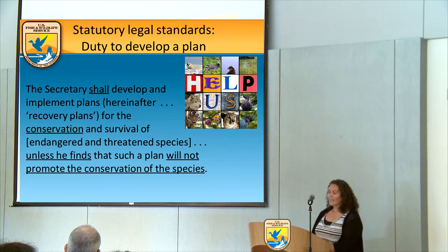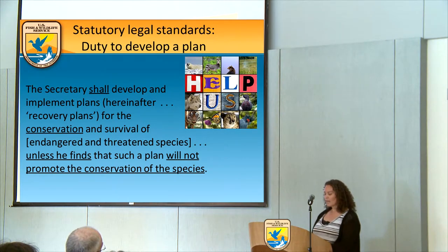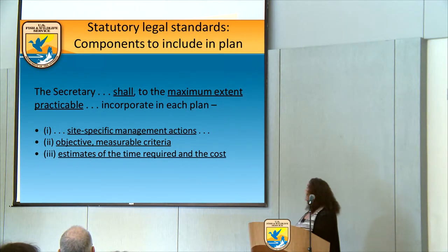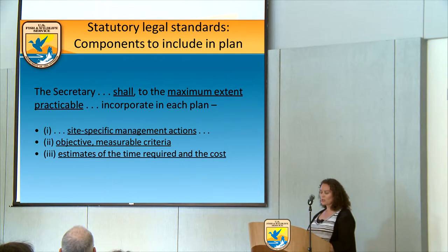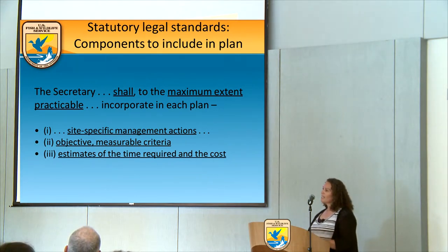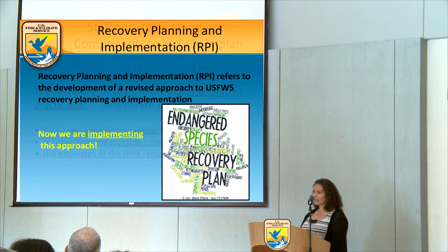Under the Act, it's the Service's duty to develop a plan for the species. The Act states that the Secretary shall develop and implement plans for the conservation and survival of listed species. There are three statutory components: site-specific management actions necessary to achieve the plan's goal; objective and measurable criteria which, when met, may indicate the species no longer requires protection; and estimates of the time required and cost to carry out recovery actions.